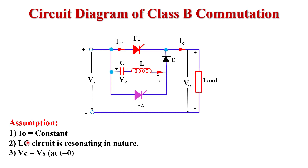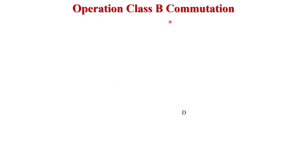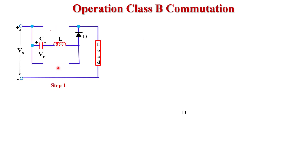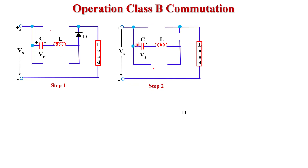For the operation of Class B commutation, the first step: initially both thyristors T1 and TA are turned off and behave like open circuits. Current flows from supply voltage through the LC circuit, diode, and load, and back to supply voltage. As current flows in this direction, the capacitor slowly charges to VS voltage. The polarity across the capacitor is positive on one plate and negative on the other. Due to this negative polarity, diode D is reverse biased and behaves like an open switch, so the capacitor holds +VS voltage.